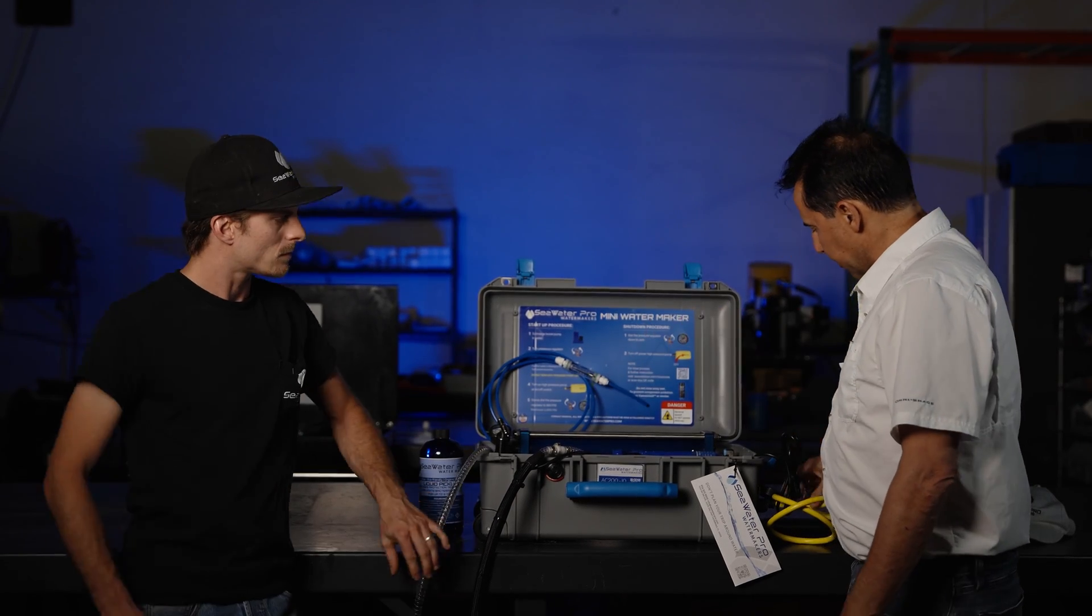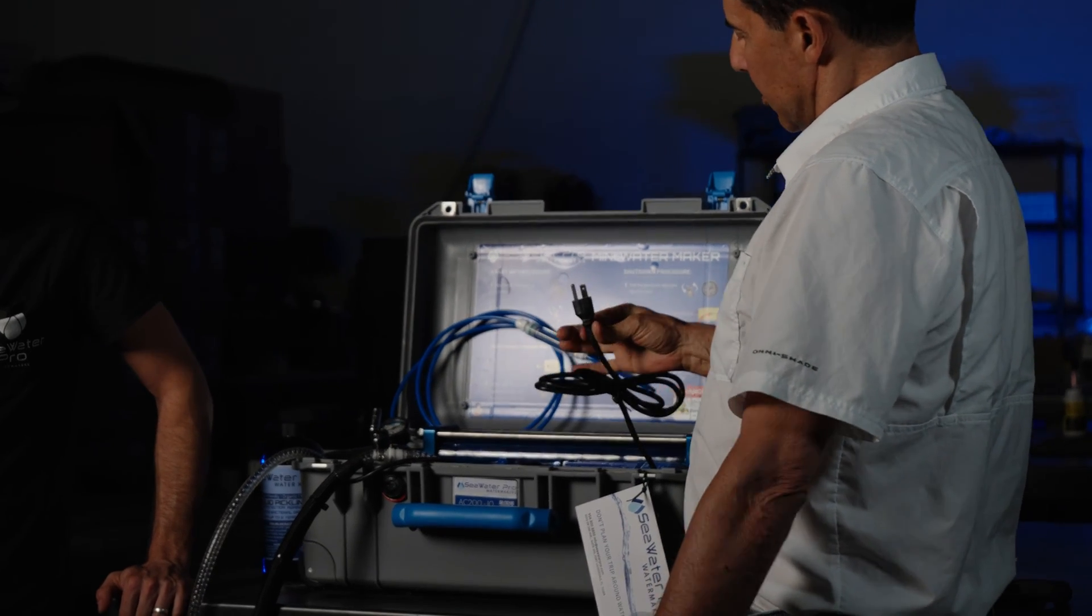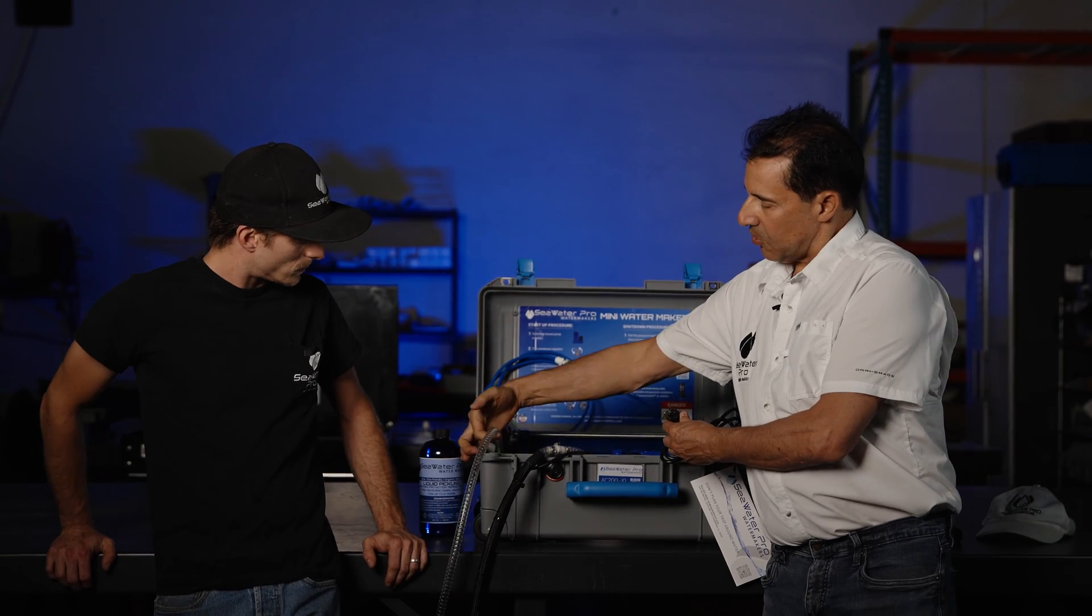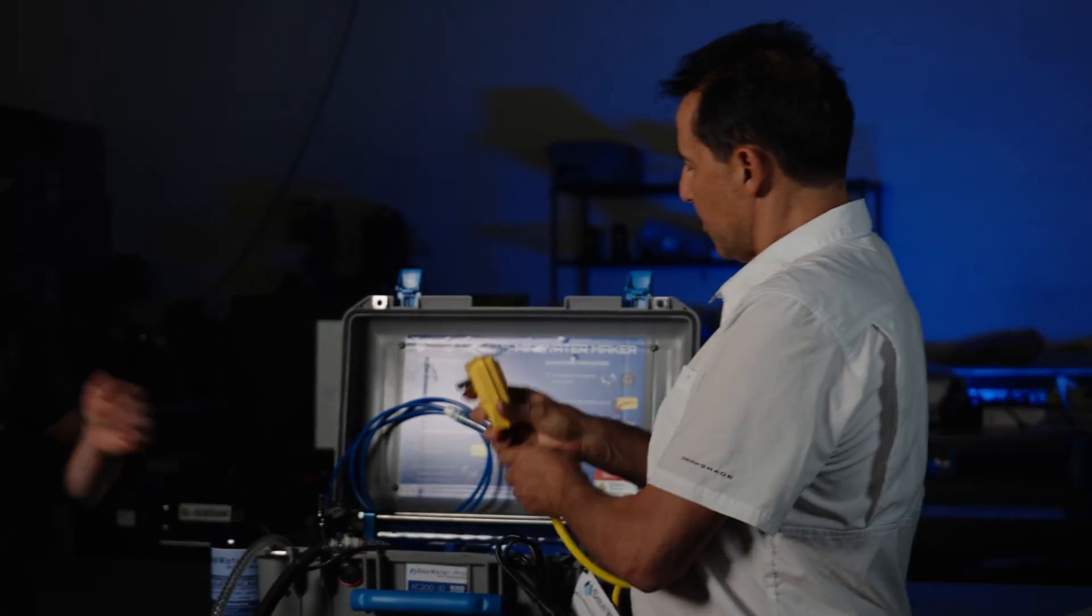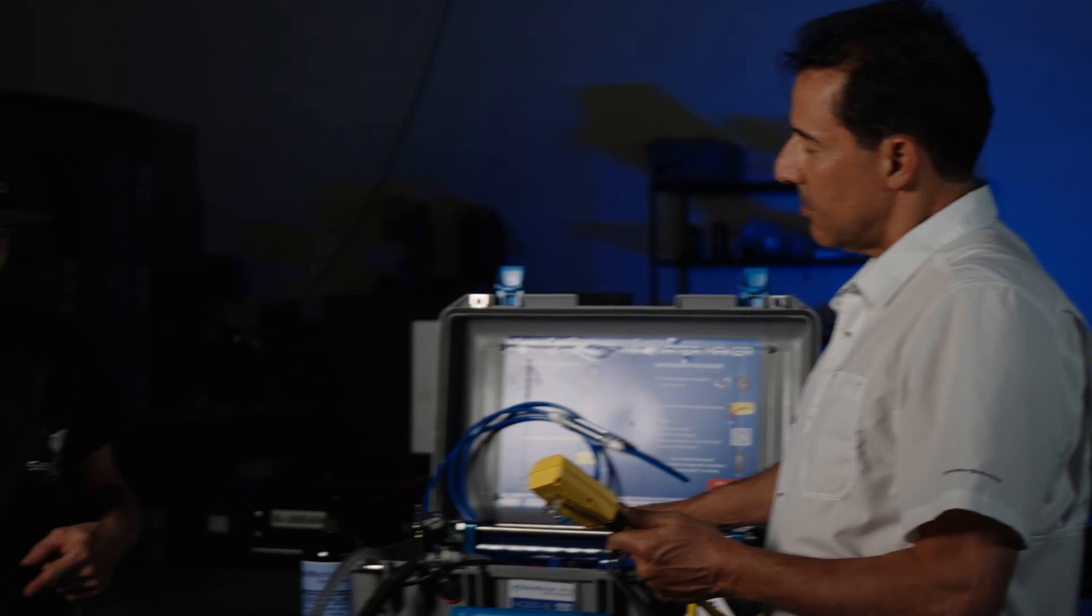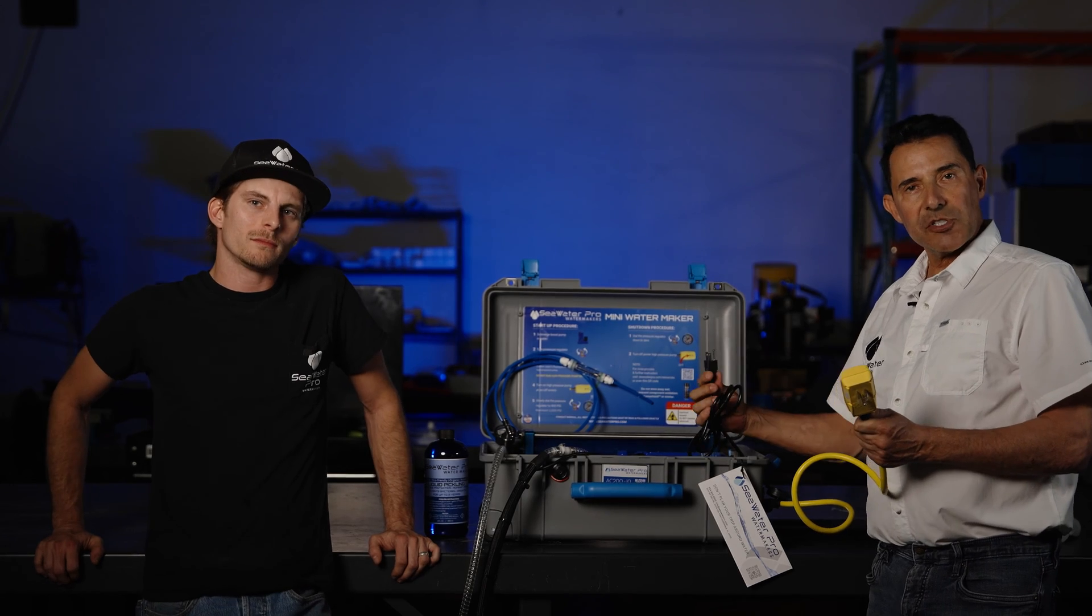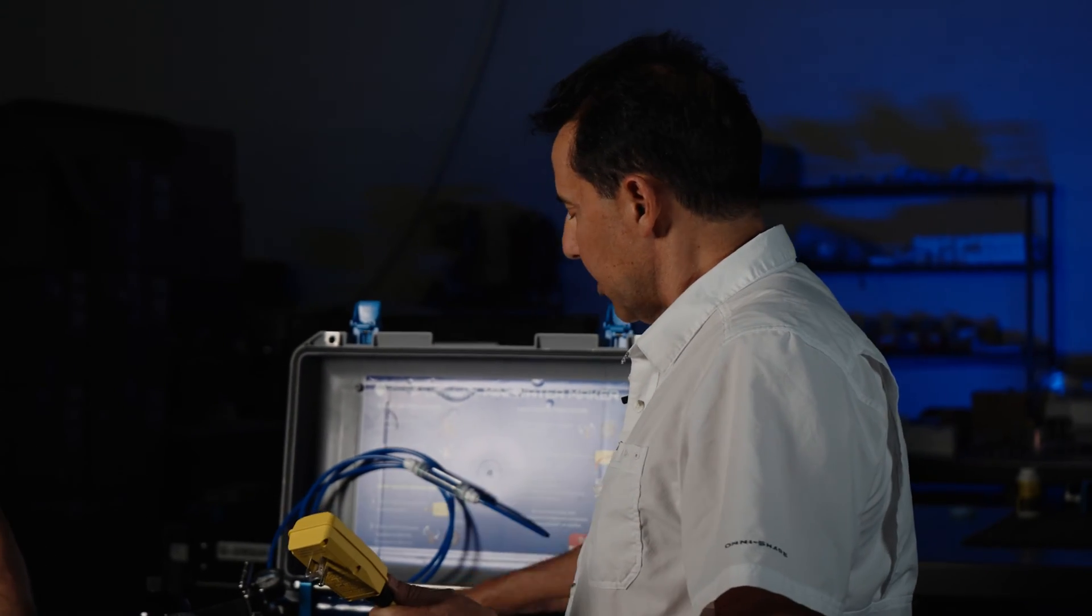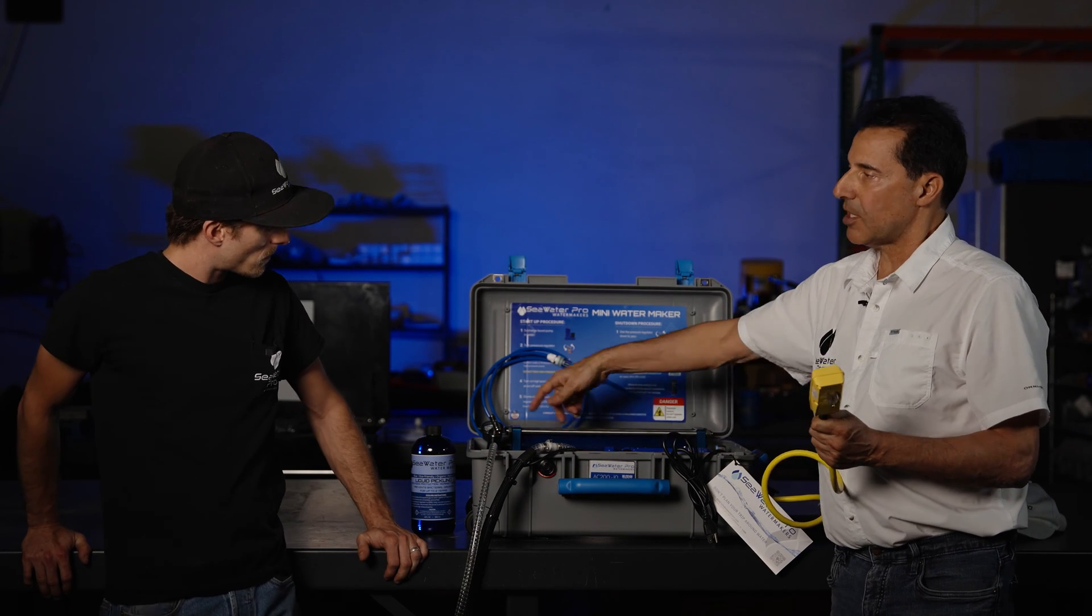And the first thing you want to do is plug in your boost pump. The boost pump is the pump that's in the water. As soon as you notice some water flow coming out of this hose then you turn on the high pressure pump. The high pressure pump will take the pressure to 800 psi. Why do we have two different plugs for the boost pump and the high pressure? That's a good question. That's because we want to run the boost pump first. Make sure that there is water because we don't want to run the high pressure pump dry.